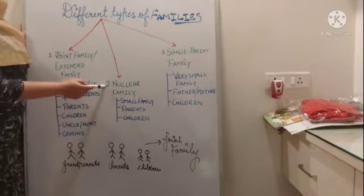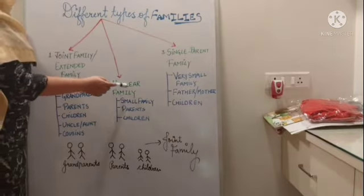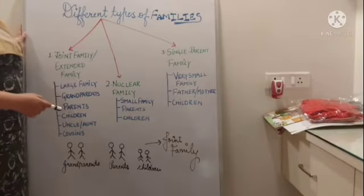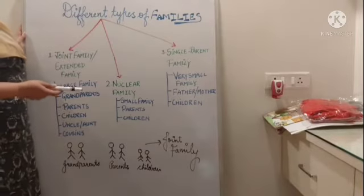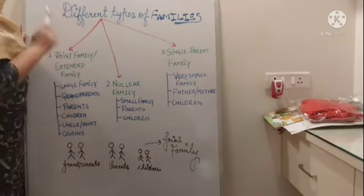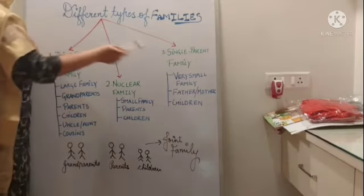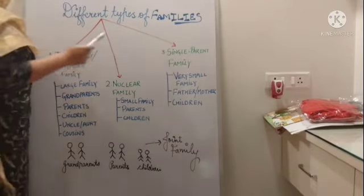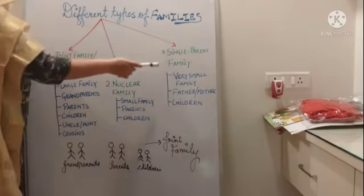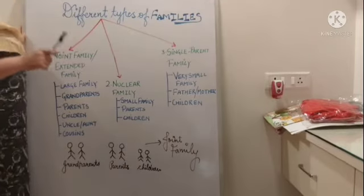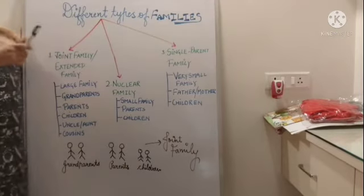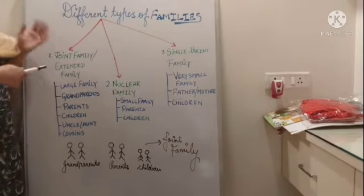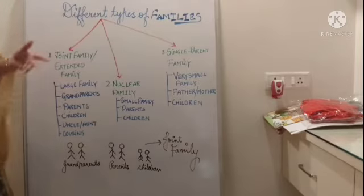The second one is nuclear family — N-U-C-L-E-A-R — nuclear family. And the last one is single parent family — S-I-N-G-L-E — single parent family. So let's discuss about them one by one.